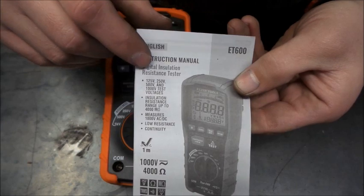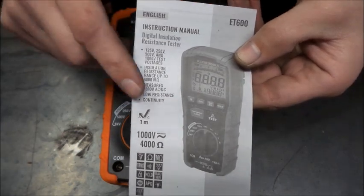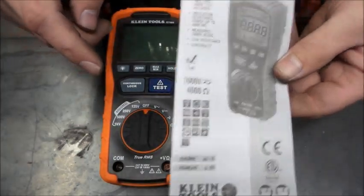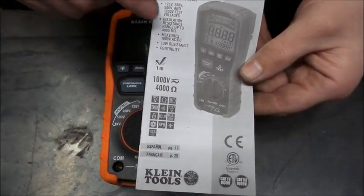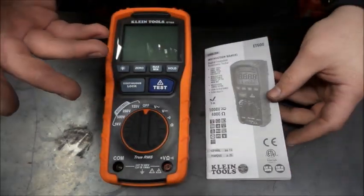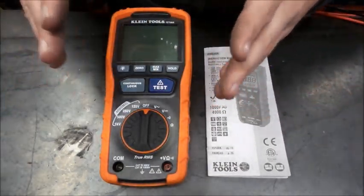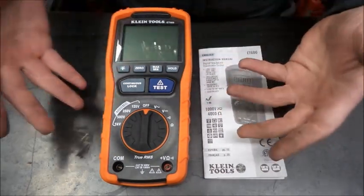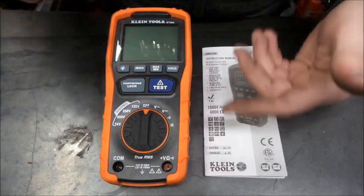And what this does is it will put voltage out to test resistance in insulation. It'll check for resistance leaks. Basically, this puts out a set voltage and if there's a current draw somewhere it does a calculation and tells you what the resistance is.